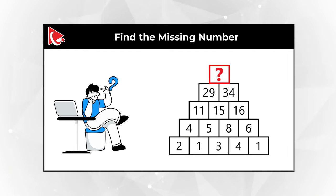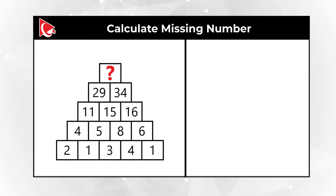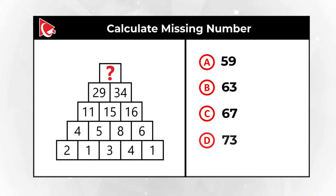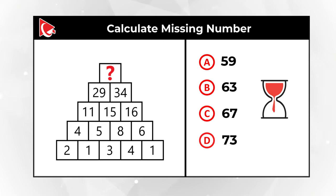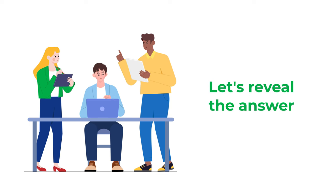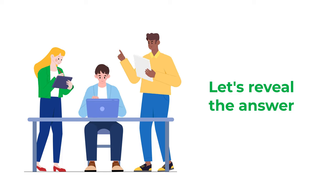You need to calculate the missing number at the top row. You have 4 choices: Choice A: 59, Choice B: 63, Choice C: 67, Choice D: 73. Give yourself maybe 10 to 15 seconds to see if you can answer this question. Let's move forward and I'll share my solution. If you have a better way to solve it, please make sure to post it in comments.